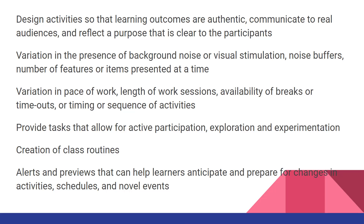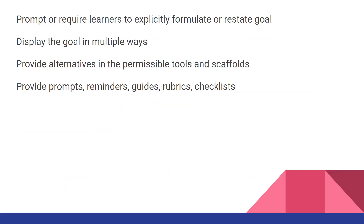It doesn't mean that we only take them to places where they're going to be successful — we have to help them anticipate that there might be challenges ahead. We have to prompt learners to explicitly formulate or restate goals so that they stay actively engaged. We need to display our goals in multiple ways. We may have three goals we're working on in the workplace, but we've got to make sure they have them in front of them and that it's very clear.